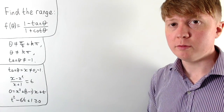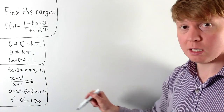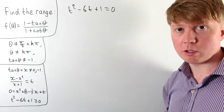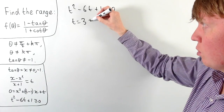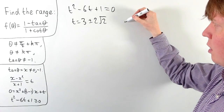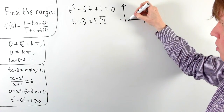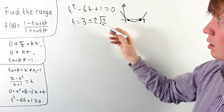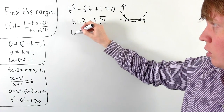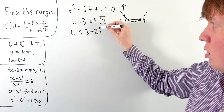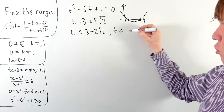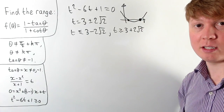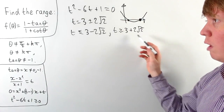To solve this inequality, we first look for values of t where the quadratic equals zero. Solving t² - 6t + 1 = 0 using the quadratic formula gives t = 3 ± 2√2. Sketching the quadratic, we can see it is positive when t ≤ 3 - 2√2 and when t ≥ 3 + 2√2. So we get these two parts where the discriminant condition holds, which should give us the range of our function.